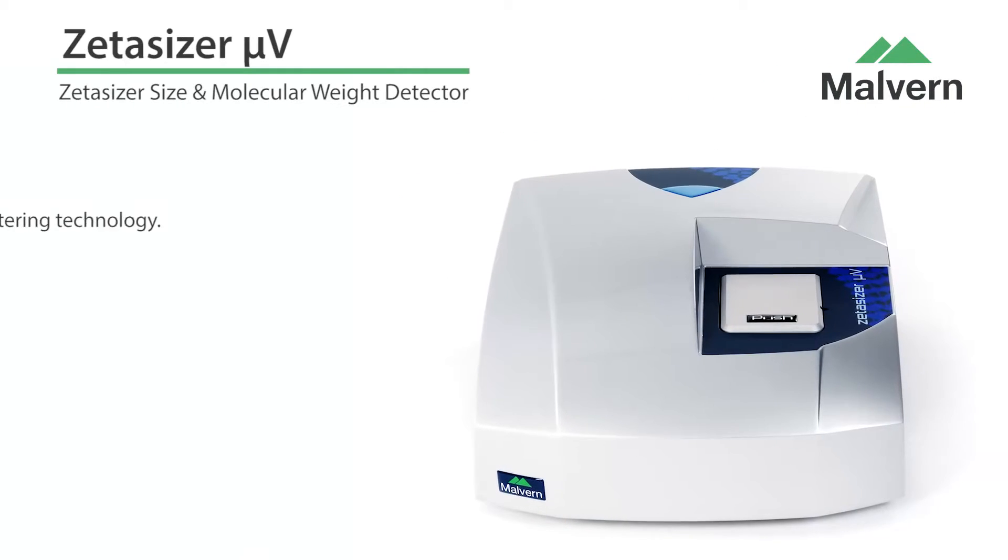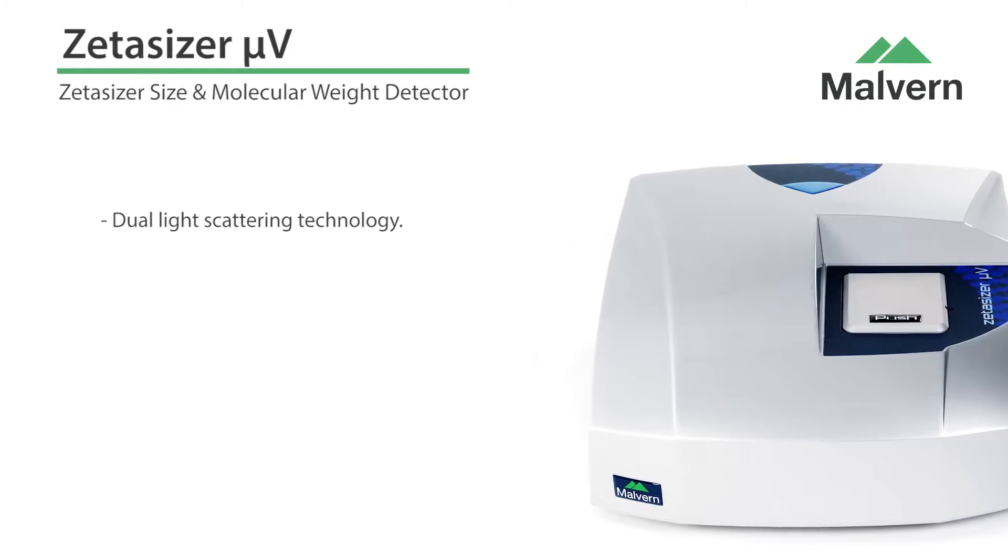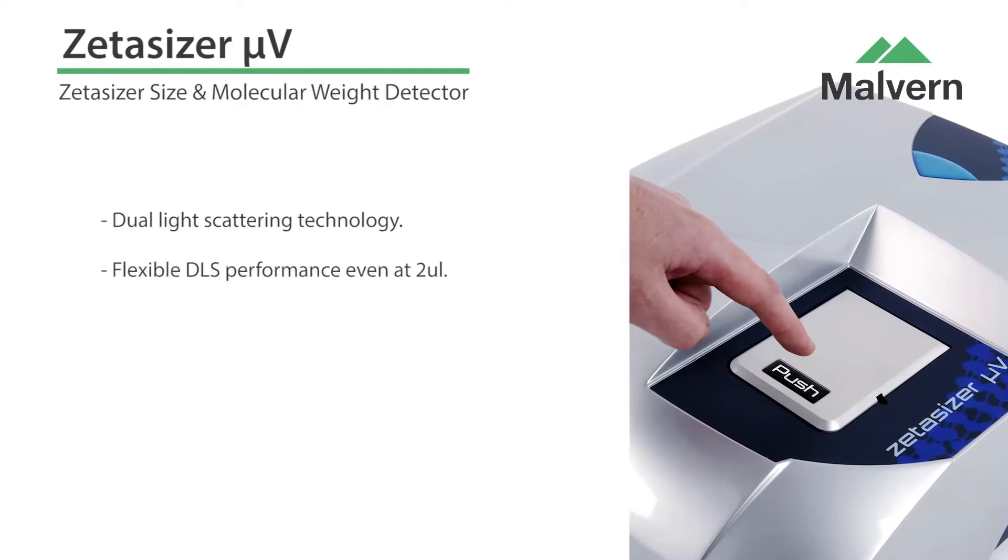The Zetasizer Micro V is a dual-purpose light scattering instrument designed specifically for the analysis of proteins.